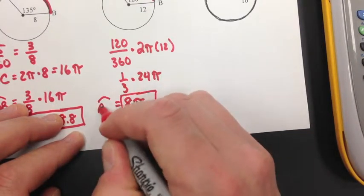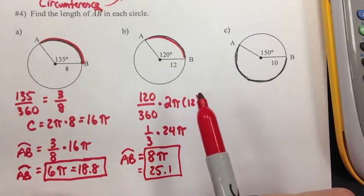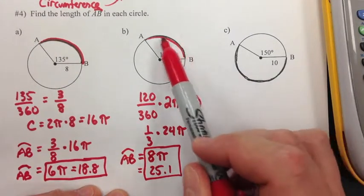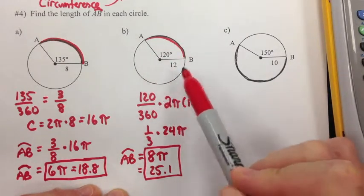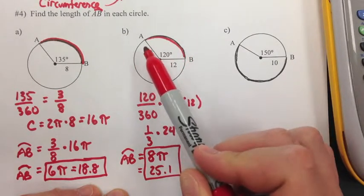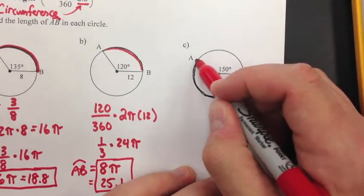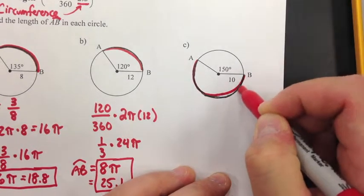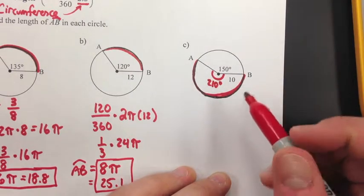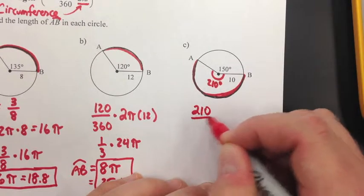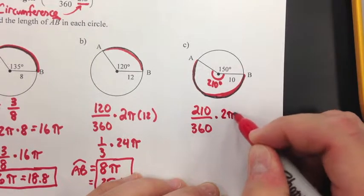The length of arc AB is 8 pi or 25.1. One important distinction: arc length is not the same as arc measure. Arc measure goes up to 360 degrees — it's an angle. Arc length is an actual distance, which is why we use circumference. For part c, we're finding the length of the major arc, so we use 210 degrees, not 150. The formula is: central angle over 360 times the whole circumference, which is 2 pi times 10.